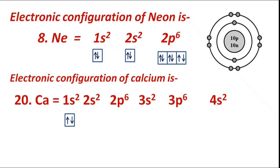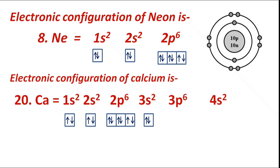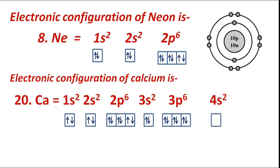By the same way, next to 2s: at first electrons fill singly, then pairing occurs with electrons of opposite spin. Then electrons fill the 3s sub-level singly, then pair with opposite spin electrons. At first, filling of electrons takes place in 3p sub-levels singly, then pairing occurs with electrons of opposite spin. After that, to the next energy level 4s: at first filling takes place singly, then pairing occurs with electrons of opposite spin.